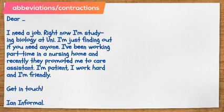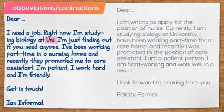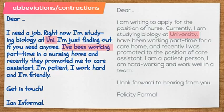It's more common in informal English to use shortened forms of words and verbs. Here we have 'uni', which is okay if you're speaking, but not when you're writing. We should use the full word 'university' instead. And 'I've been' — we could use 'I have been'.